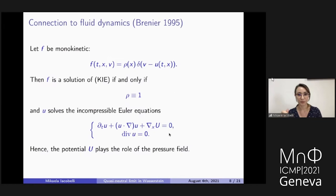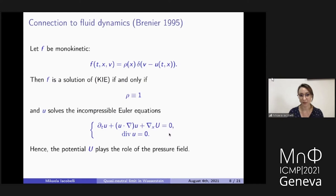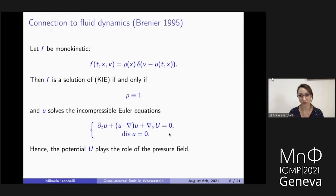The first person to observe that kinetic incompressible Euler is related to the incompressible Euler equation was Brenier, between the end of the 80s and beginning of the 90s. He observed that if f is a monokinetic function — f(t, x, v) = rho(x) times a delta centered in the velocity field — then f is a solution of kinetic incompressible Euler if and only if rho is identically one, and u solves the incompressible Euler equation. Therefore u here plays the role of the pressure field, acting as a Lagrange multiplier enforcing incompressibility.